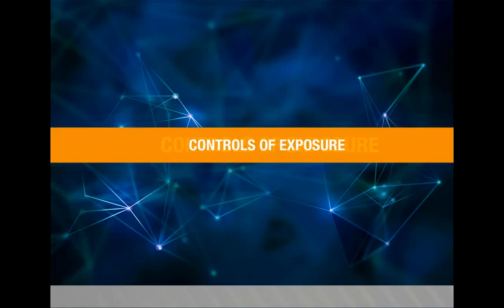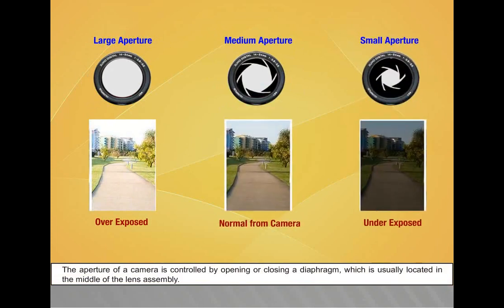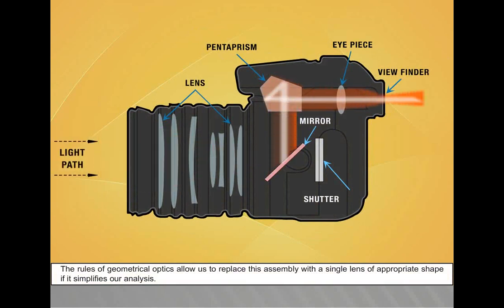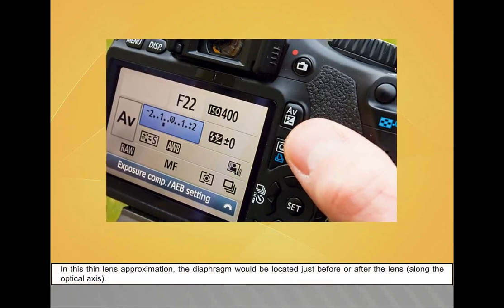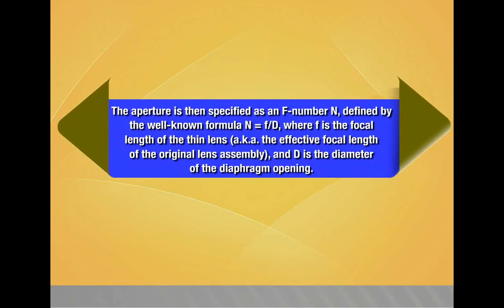Controls of exposure. The aperture of a camera is controlled by opening or closing a diaphragm, usually located in the middle of the lens assembly. In the thin lens approximation, the diaphragm would be located just before or after the lens along the optical axis. The aperture is then specified as an F-number N defined by the formula N = F/D, where F is the focal length of the thin lens and D is the diameter of the diaphragm opening.